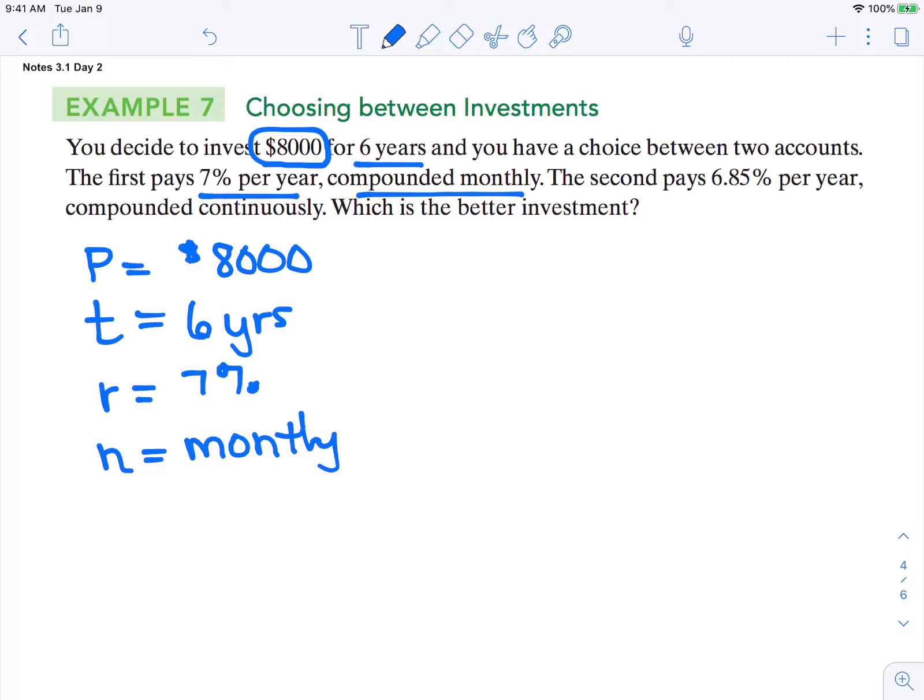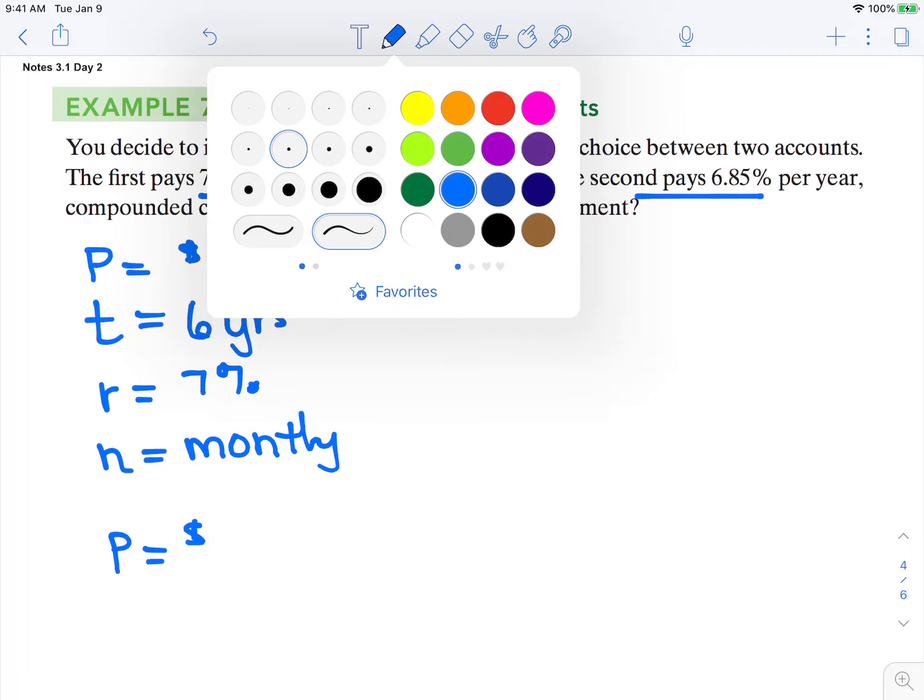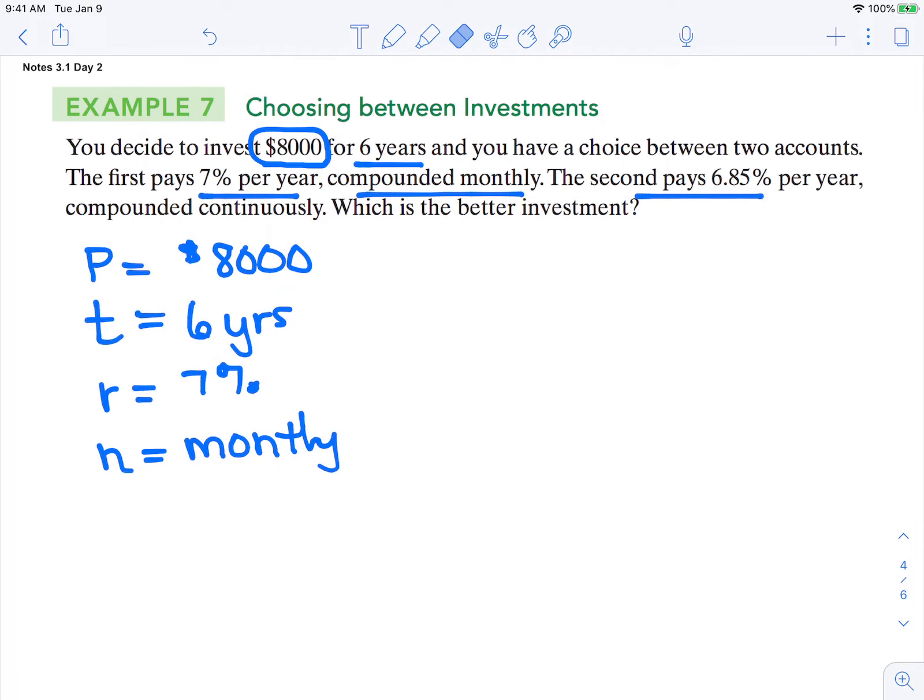Then there's a second one having the same initial amount of $8,000. Time is still the same, six years. But now we're changing the interest rate to 6.85% and it's compounded continuously. So there isn't an N. N does not exist, so we're going to have to use the PERT equation on this problem.